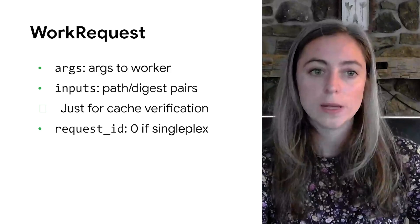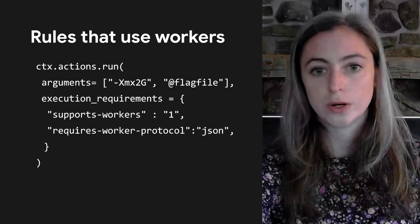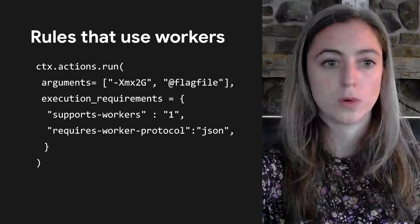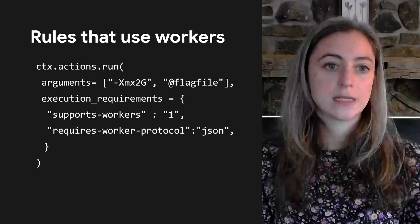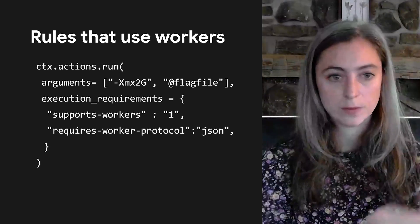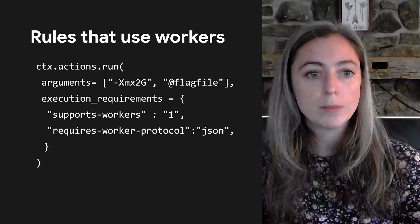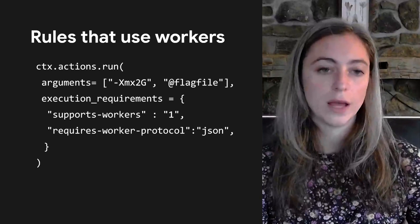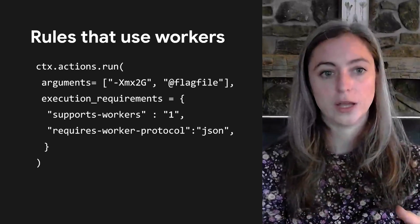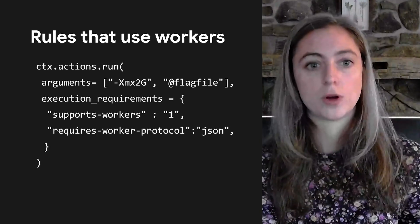The work request also contains a request ID, which is zero if the worker is not a multiplex worker. The worker interprets the request, does what it needs to do, writes what it needs to write to the file system, and then returns a work response. A work response contains an exit code — just zero versus non-zero — the same request ID from the work request, and an output field. Since the worker shouldn't be writing anything to standard out other than the work response, you might have any error messages placed into this output field so that Bazel can parse them.